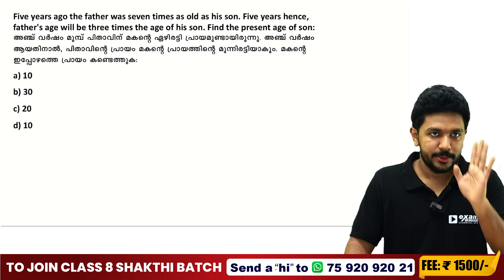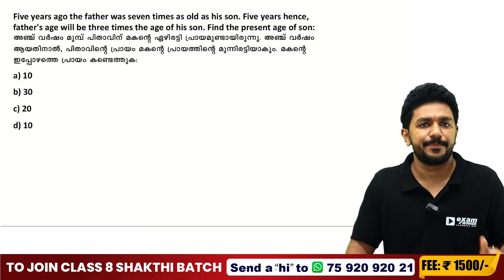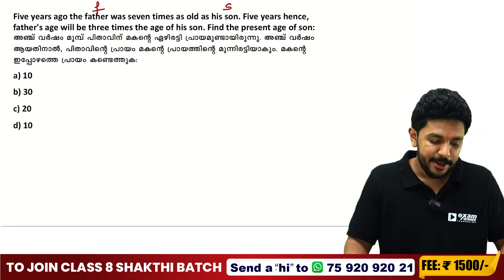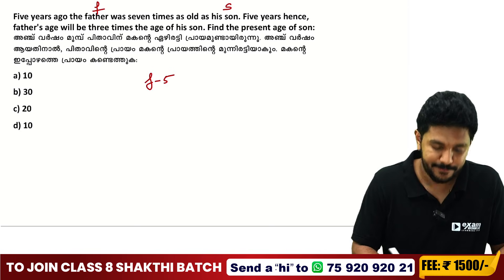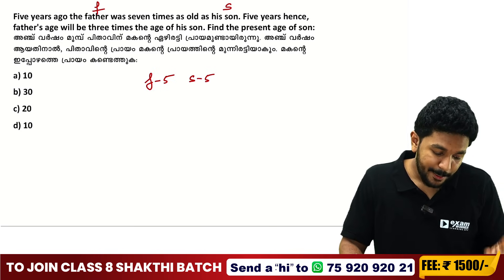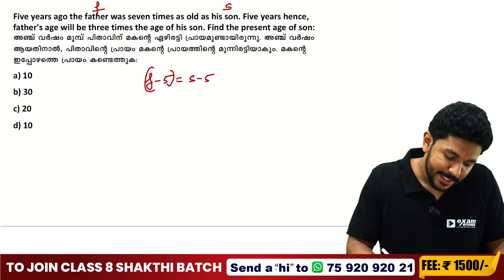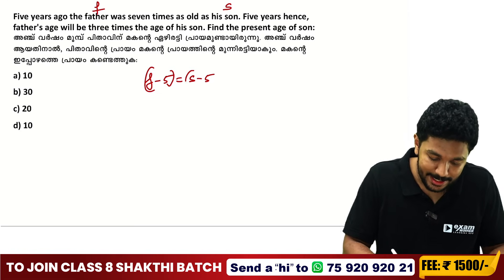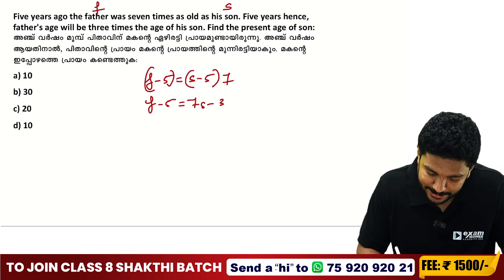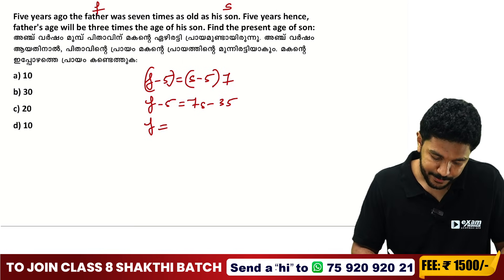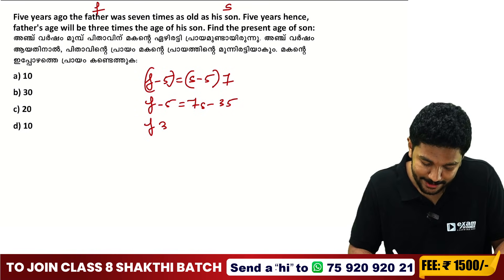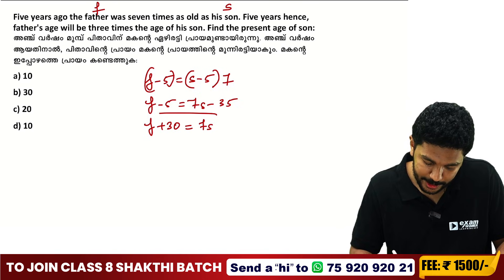5 years ago, father's age is F minus 5 and son's age is S minus 5. Father was 7 times as old as son: F minus 5 equals 7 times S minus 5, which gives F minus 5 equals 7S minus 35, so F equals 7S minus 30. This is our first equation.